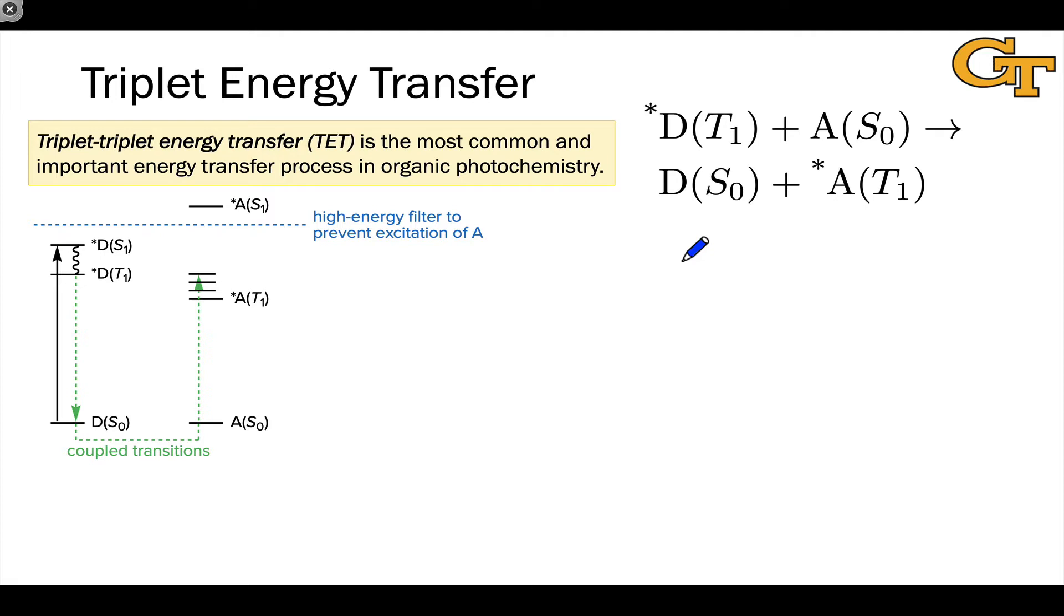A general scheme for triplet energy transfer is shown here on the right. We start on the reactant side with a donor molecule D star, typically in its T1 state, and an acceptor molecule in its singlet ground state. On the product side, we have the energy donor now in its singlet ground state, and the acceptor now in its excited T1 state. So we have indeed transferred energy and converted a singlet to a triplet.